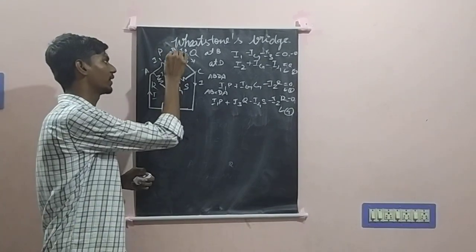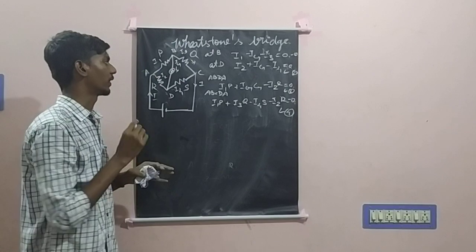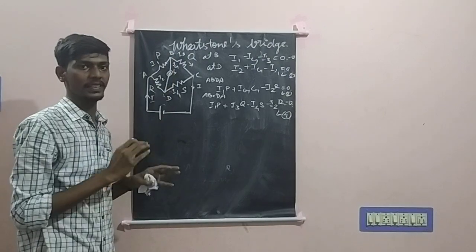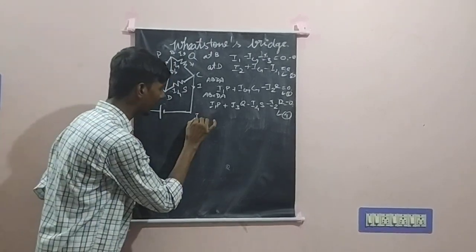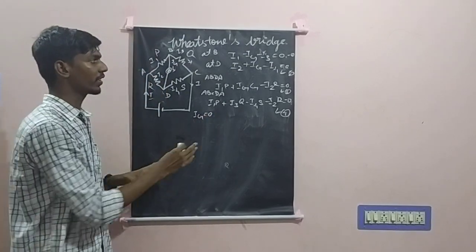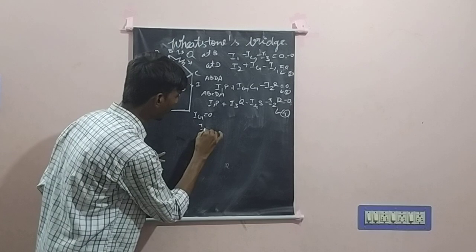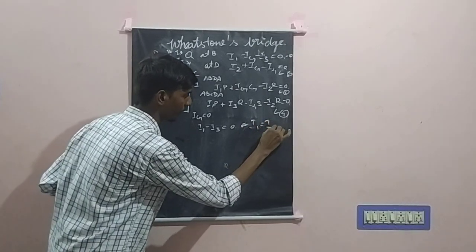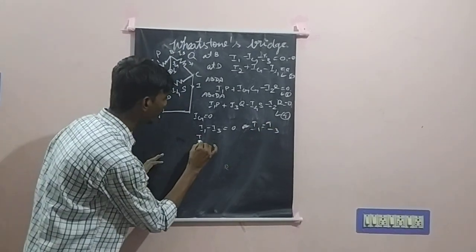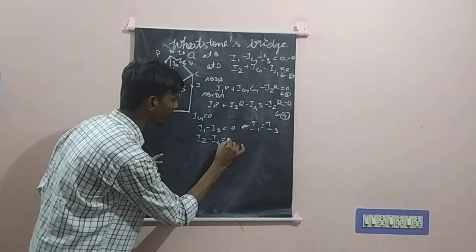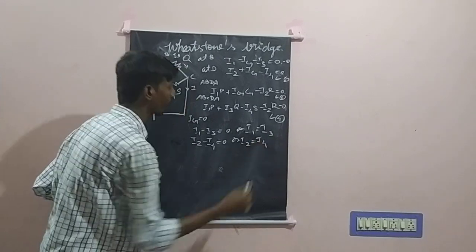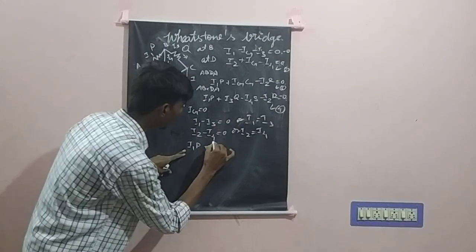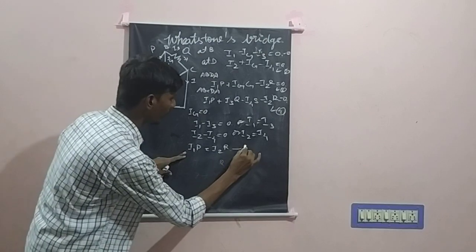Now let us consider the balancing condition, where junctions B and D are at the same potential. When the potential difference is the same, there will be no current flowing between these junctions — that is, IG becomes 0. Applying this condition to the first three equations, we find I1 equals I3 and I2 equals I4. Applying it to the third equation, we get I1P equals I2R. Let this be equation 5.